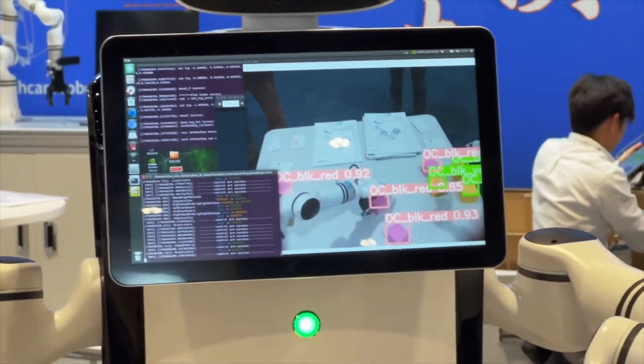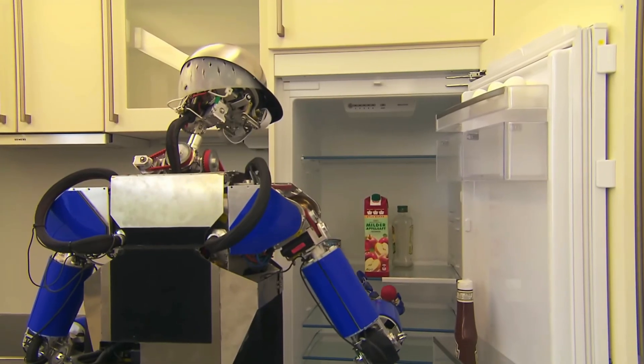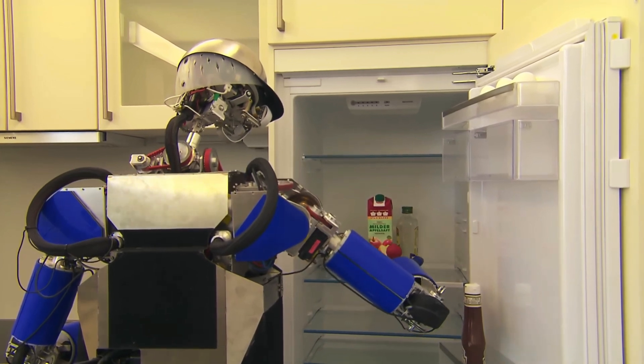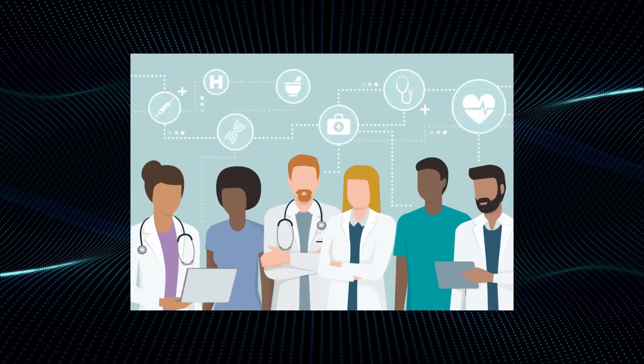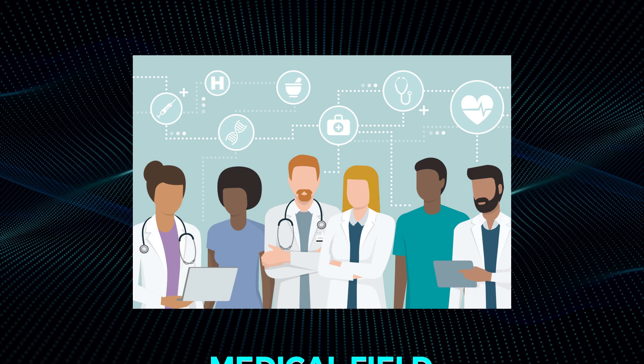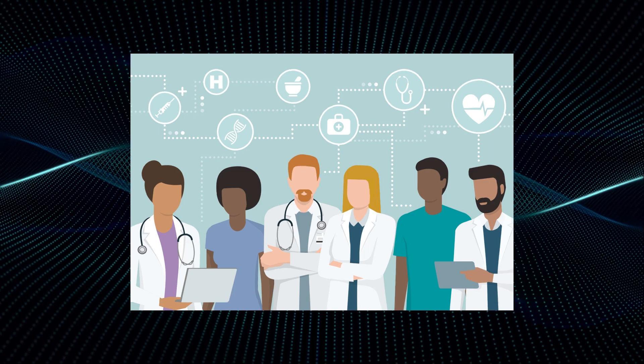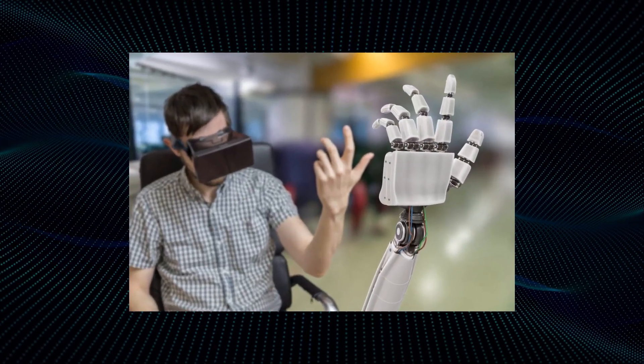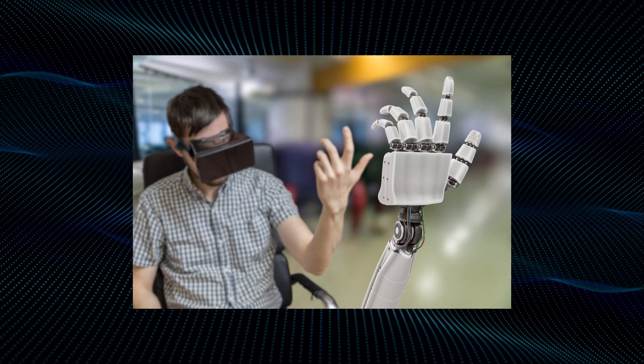So what does the future hold for robots with skin? The potential applications for living robot skin are vast and varied. In the medical field, it could be used to create more realistic and functional prosthetics, improving the lives of amputees and other individuals with disabilities.